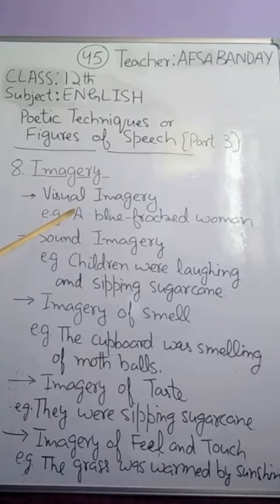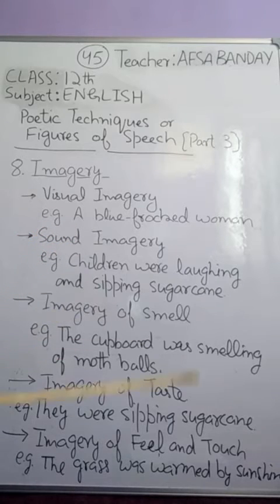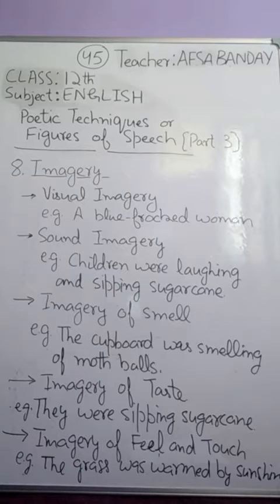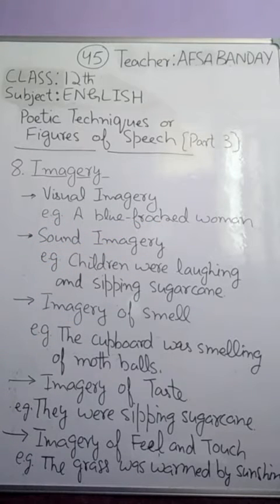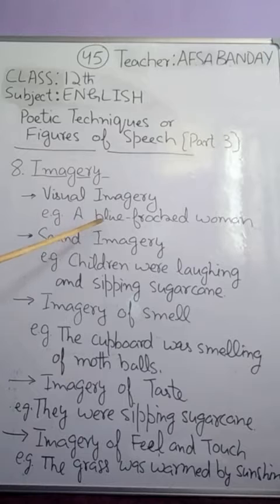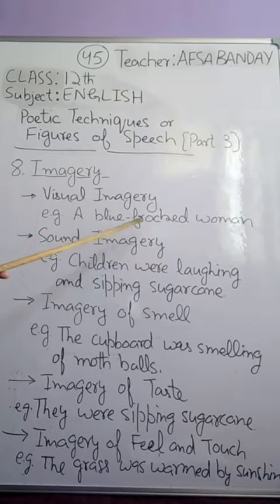First is visual imagery, related to the eyes. When words are presented and it seems as if you are seeing something, that's called visual imagery. For example, 'a blue-frocked woman.' An image of a woman wearing a blue frock comes to mind. Since it's as if we are seeing her, it's called visual imagery.